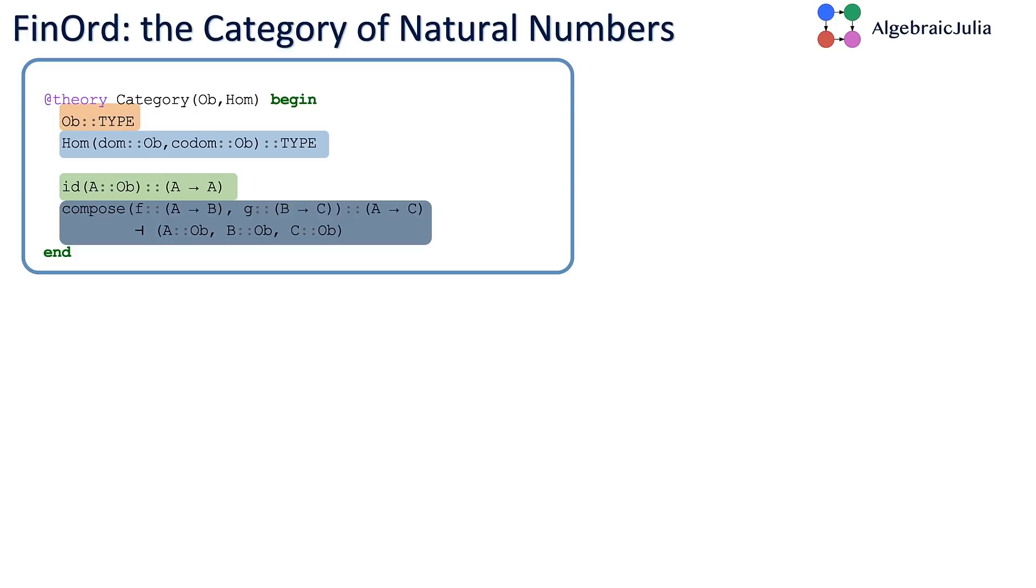Categories have these four components: objects, HOMs, an identity HOM for every object, and composition. If you have a HOM from A to B, and then from B to C, you can compose them to get a HOM from A to C, just like how sets and functions work.